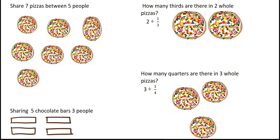Hi there. This video is going to look at division with fractions. The first example is where we need to share 7 pizzas between 5 people. If we were to write that, it would look like 7 divided by 5. Let's have a look at this visually, because it's always good to see what this actually looks like with a physical example.